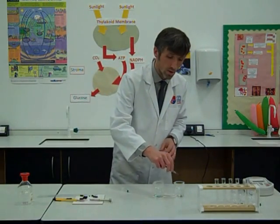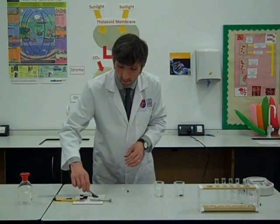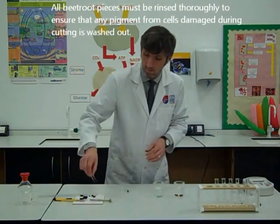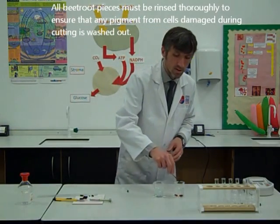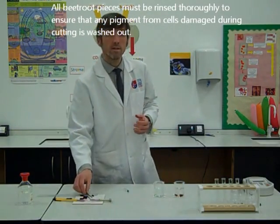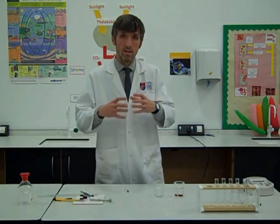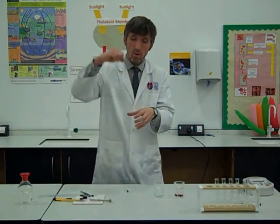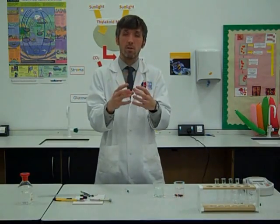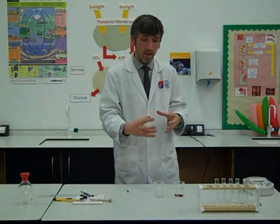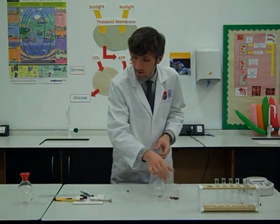For each piece, we're going to rinse it in water first before we put it into the alcohol. The reason for that is that some of the cells become damaged during the cutting process. When you cut through them with a core borer, it damages the membranes of the cells, and therefore pigment leaks out, as you can see there.